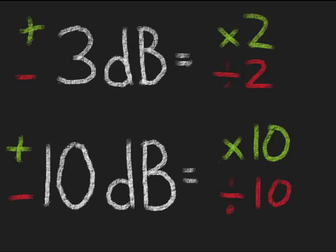So that's the rule of 10s and 3s. Just to recap, for every gain of 3 dB, the transmit power roughly doubles, and for every loss of 3 dB, the transmit power is roughly cut in half. For every gain of 10 dB, it is multiplied by 10, and for every loss of 10 dB, it's roughly divided by 10.